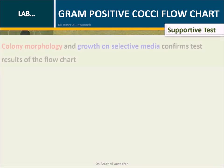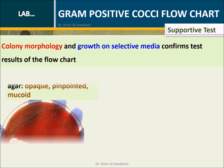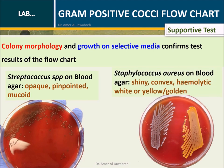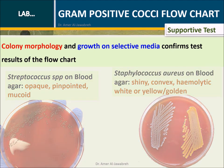Supportive tests: colony morphology and growth on selective media confirm the test results of the flowchart. For example, Streptococcus species' colonies on blood agar, and Staphylococcus aureus' colonies on blood agar.